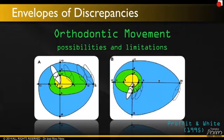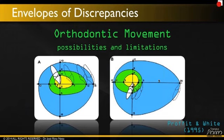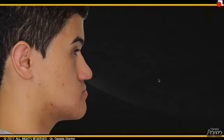If you remember Profit's Envelopes of Discrepancy from 1995 — the yellow circle was where we could go with conventional brackets, mainstream orthodontics. The green would be functional orthopedics, and the blue circle is where we could go with surgery. We can always work more on the lower third, which is the mandible, than the maxilla, which is the midface. That's our main working area.